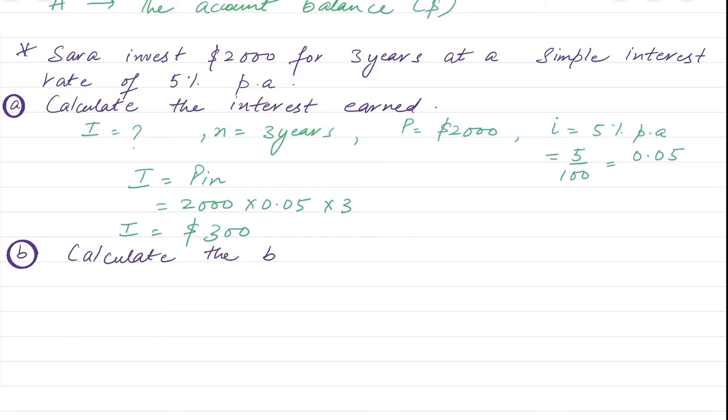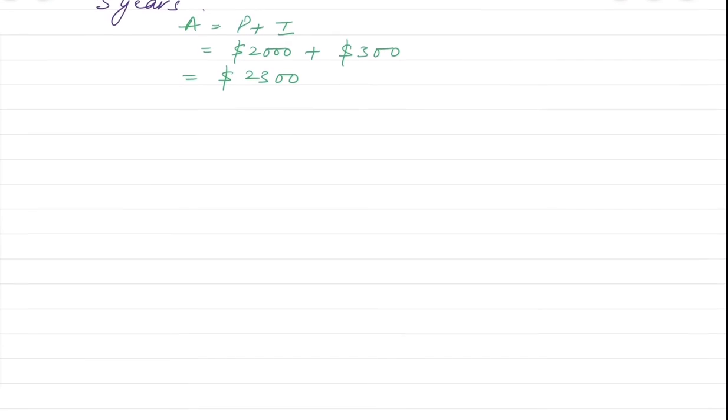Now if we have been asked that calculate the balance in the account after 3 years. Now the total account balance, which is A. And A is equal to P plus I, the principal amount plus the interest. So principal amount is $2,000, interest we have calculated, so it is $300, so it is $2,300. So in this way we can find the interest earned and the account balance.